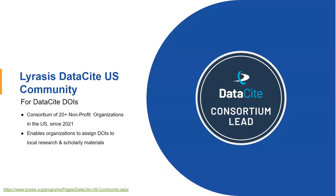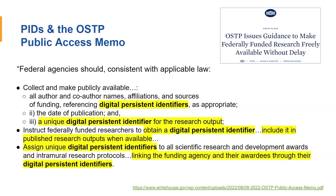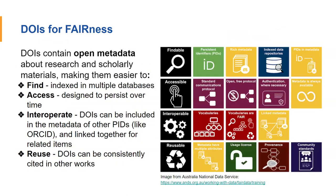Last but not least, we also have our DataSite Consortium. This is another one that any nonprofit in the US can join, especially if you're new to DataSite or only planning on creating a small number of DOIs. When joining this program, you would be able to assign DOIs to your own local research and scholarly materials. The OSTP public access memo has a whole paragraph about digital persistent identifiers — things like ORCID and DOIs — making it very clear that this is a best practice that needs to be followed. Not only should federally funded research be publicly available, it should also be correctly linked together with persistent identifiers.